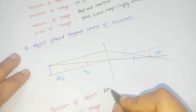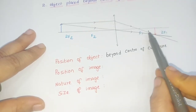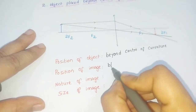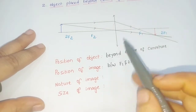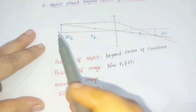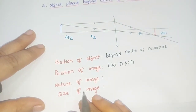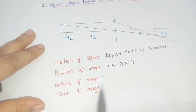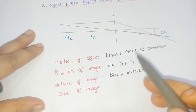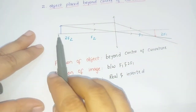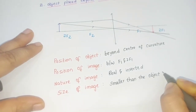Now we write the characteristics of this image. Position of object: beyond the center of curvature. Position of image: the image is formed in between the focal point F1 and the center of curvature 2F1. Nature of image: a real image is formed because the object is on one side of the lens and the image is on the other side — real and inverted. Size of image: smaller than the object, or diminished.